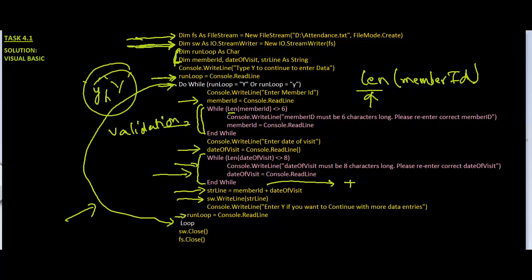Finally, just as in pseudo code — where I emphasized that once you open a file you must close it — in Visual Basic, once you open a stream you must close it. We close the StreamWriter and also close the FileStream. This is very important and should always be done. The logic is the same as in pseudo code; only the code is written differently in Visual Basic.